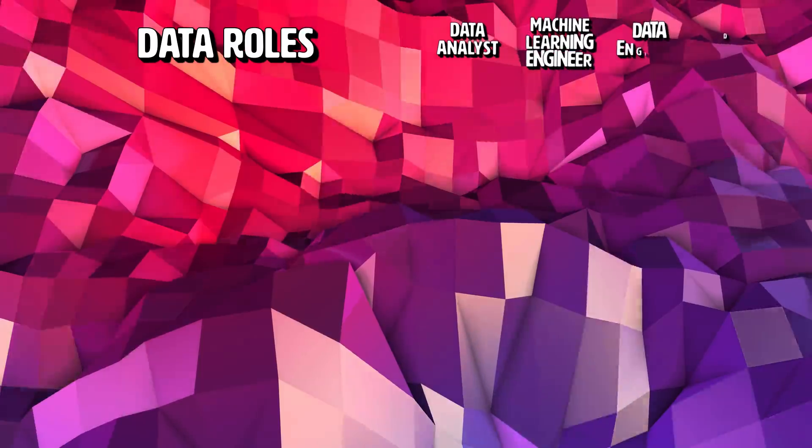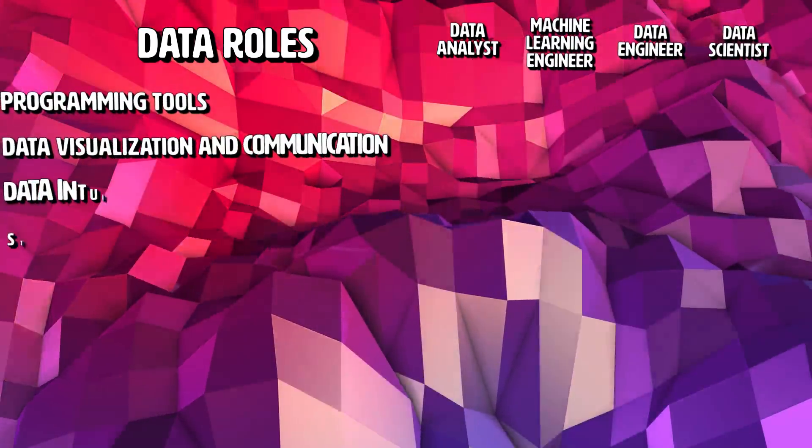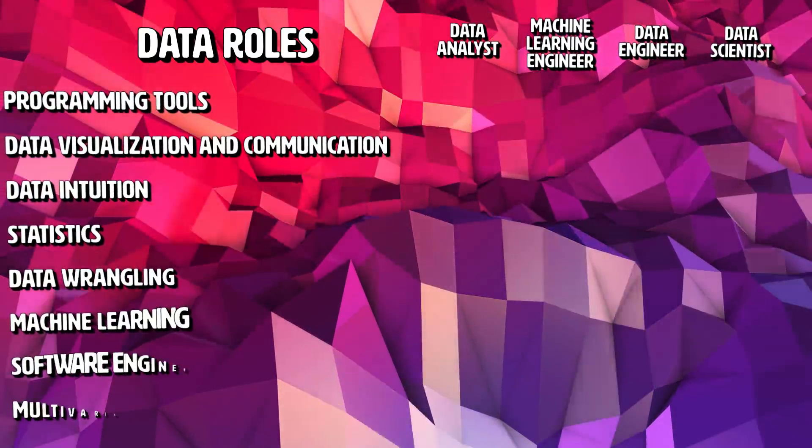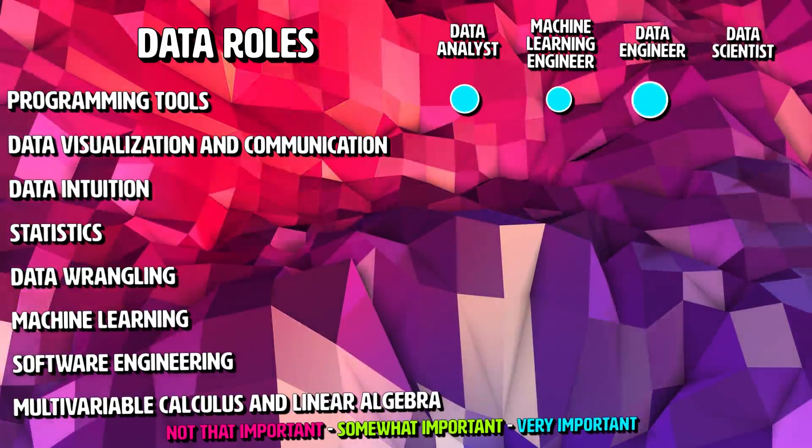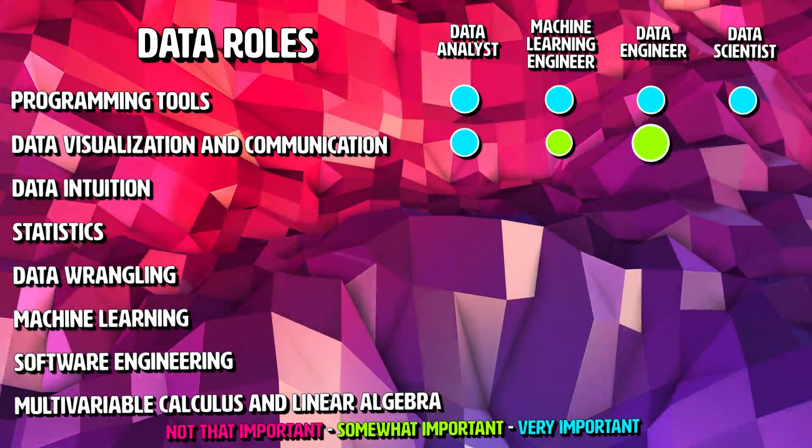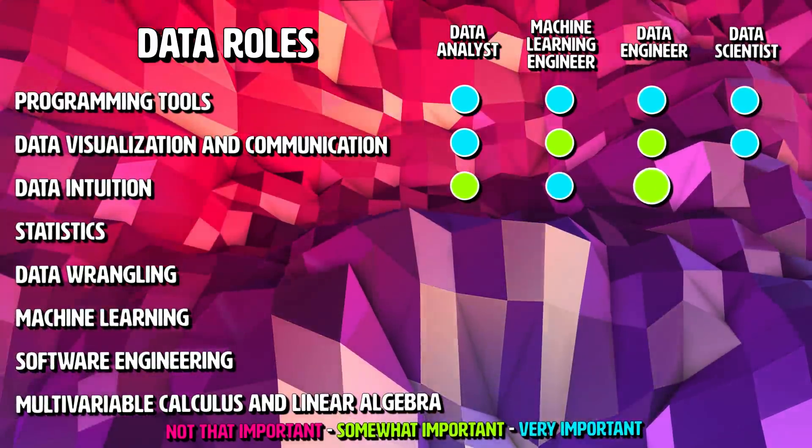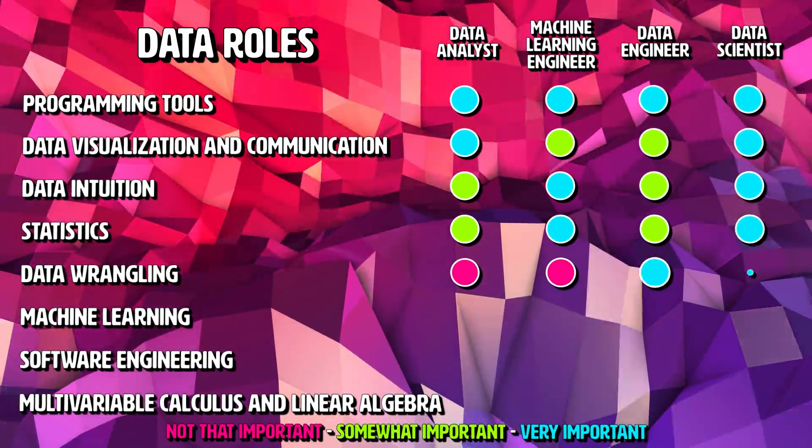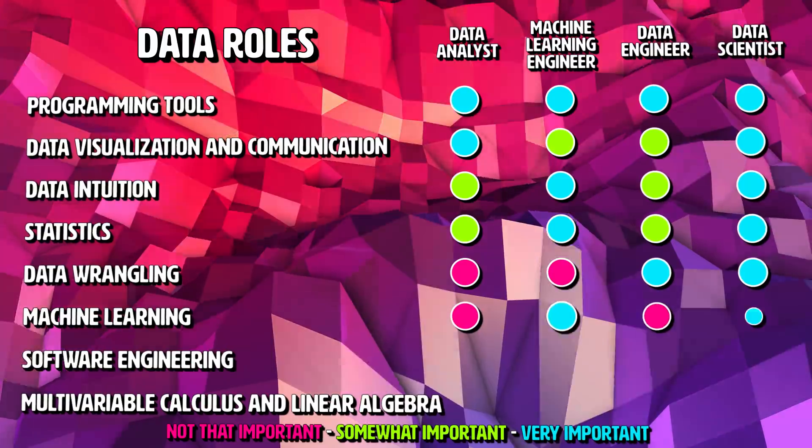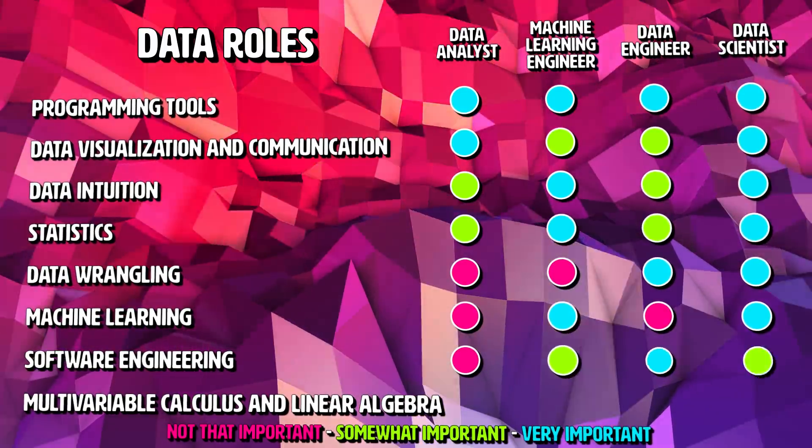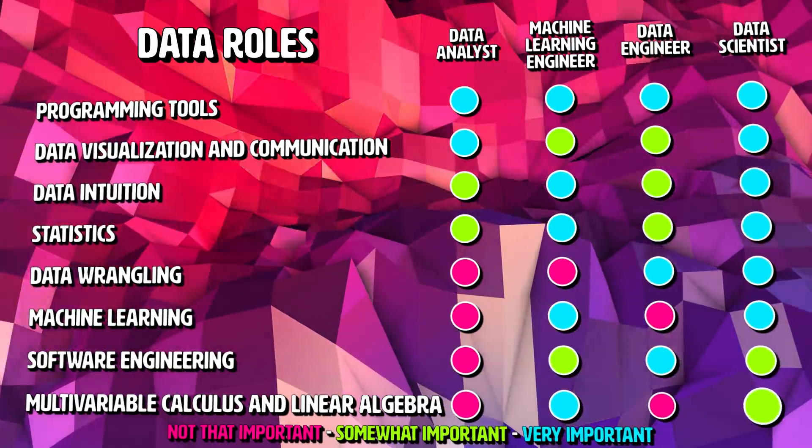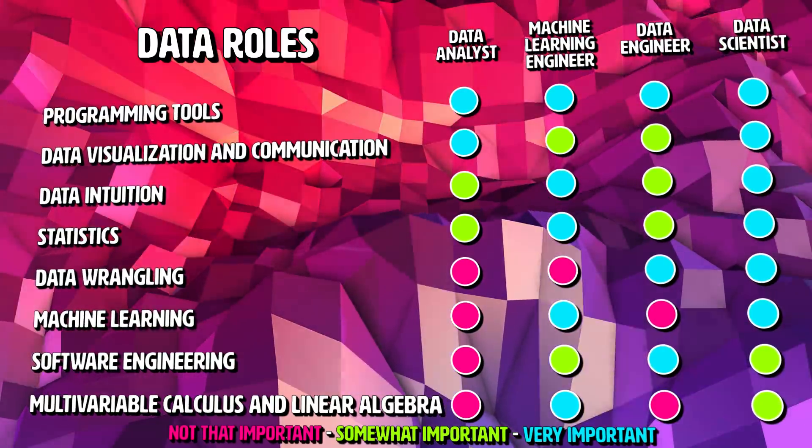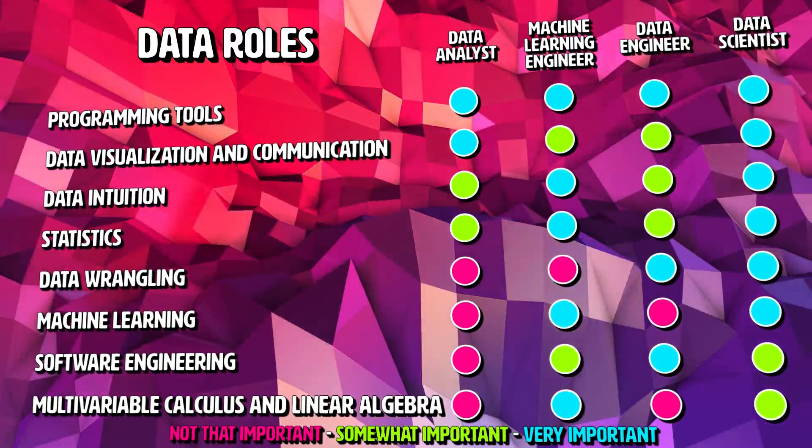Usually, a data scientist is expected to formulate the questions that will help a business and then proceeds to solve them, while a data analyst is given questions by the business team and pursues a solution with that guidance. On the other hand, a machine learning engineer's goal is to build and optimize predictive models. There's a lot of intersection between data science roles, but the data scientist is usually the most senior role.